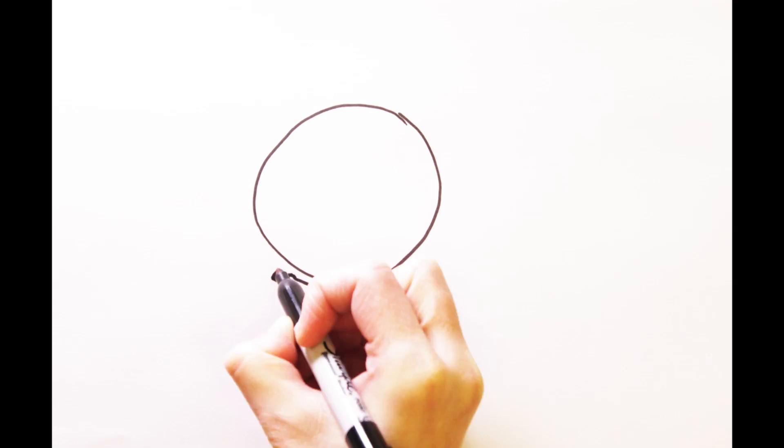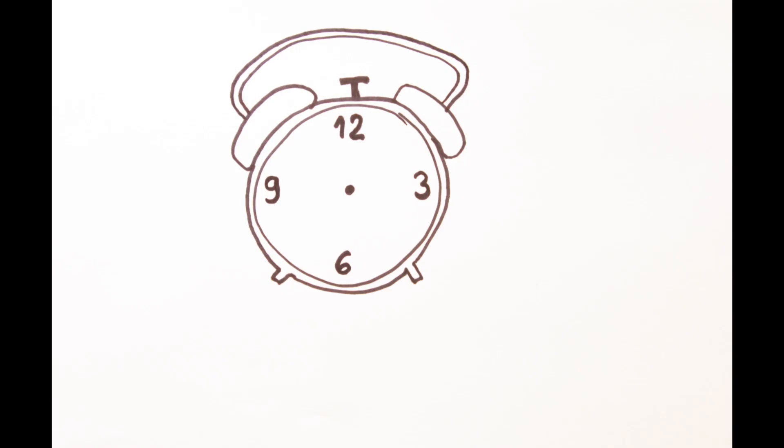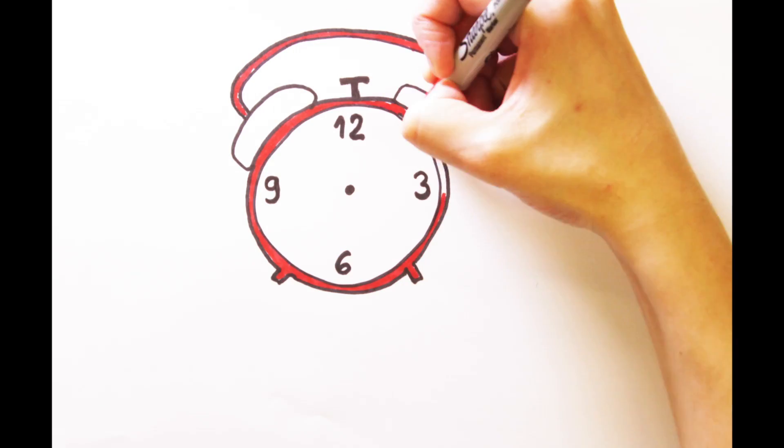Interestingly, our clocks are set differently depending on our age. While our chronotype varies between individuals, in general teenagers' internal clocks are set later,